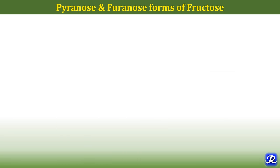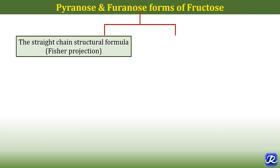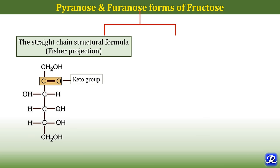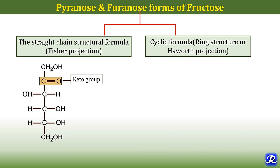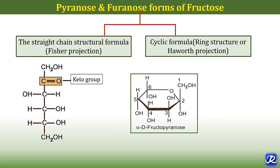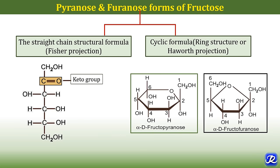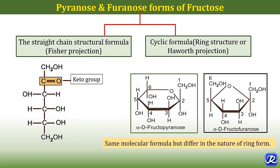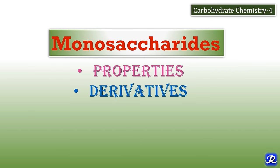Similarly for fructose — fructose can also have a straight-chain structural formula (Fischer projection) and a cyclic formula (Haworth projection). Fructose has a keto group. The fructopyranose form and the fructofuranose form of fructose both have the same molecular formula but differ in the nature of the ring form, and the fructofuranose form of fructose is more stable. In this video we have discussed the structural aspects of monosaccharides and different forms of isomerism. In the next video we will study the properties and derivatives of monosaccharides.